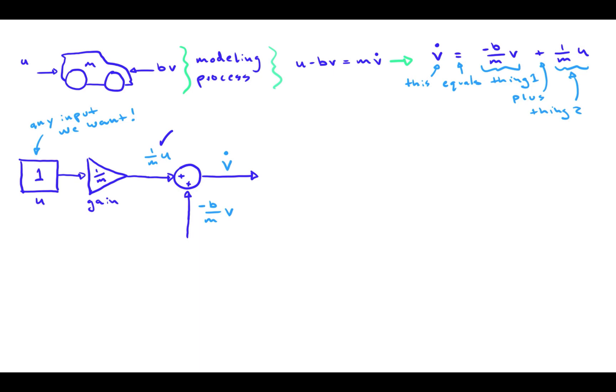We can now go to the next signal, -b/m times v. If this signal is to represent a constant value times the velocity v, it's apparent that we'll need the velocity signal v. Looking at the output of the summing junction, we notice that we have V̇.